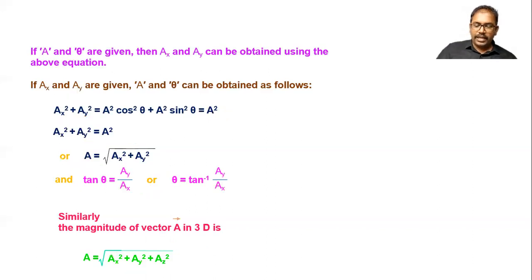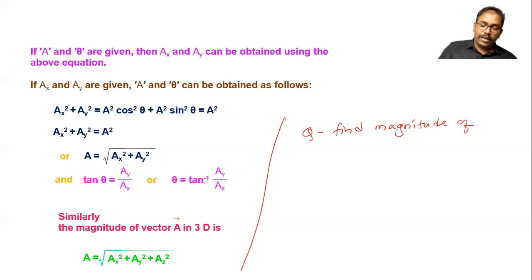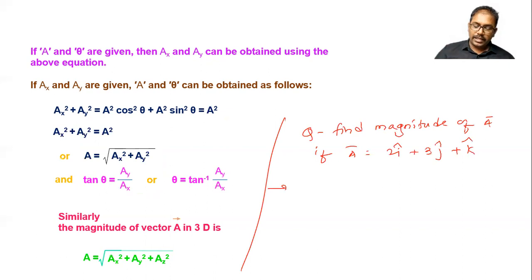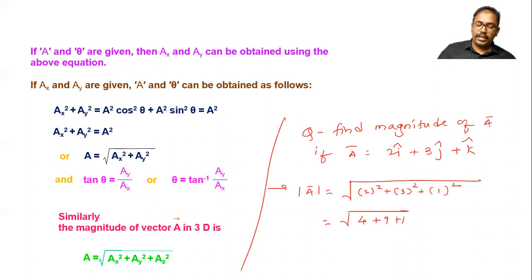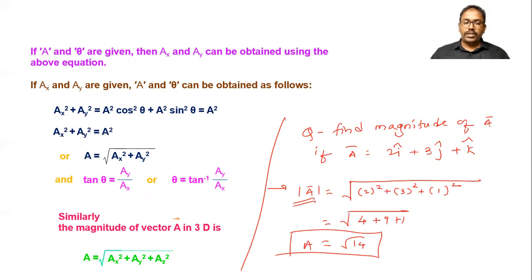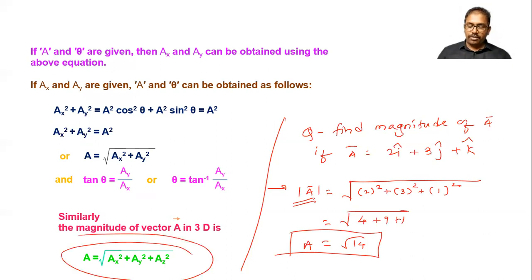Example: Find the magnitude of a-bar if a-bar equals 2i-cap plus 3j-cap plus k-cap. Using the formula, magnitude equals the square root of ax² plus ay² plus az², which is the square root of 2² plus 3² plus 1², giving the square root of 4 plus 9 plus 1, which equals the square root of 14. By using this formula we can find the magnitude of any vector.